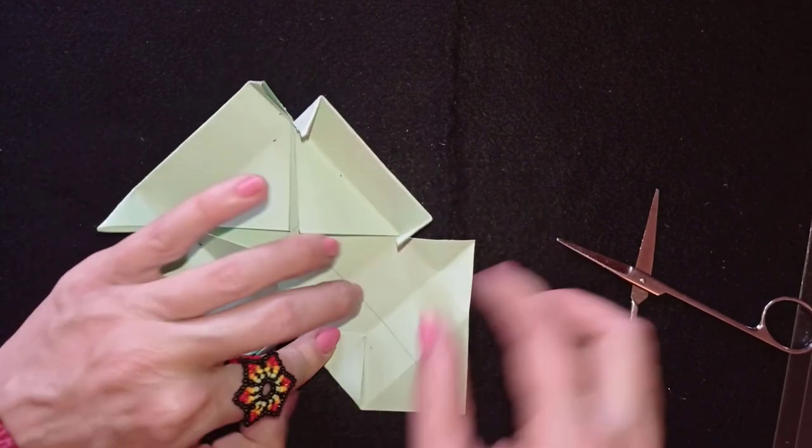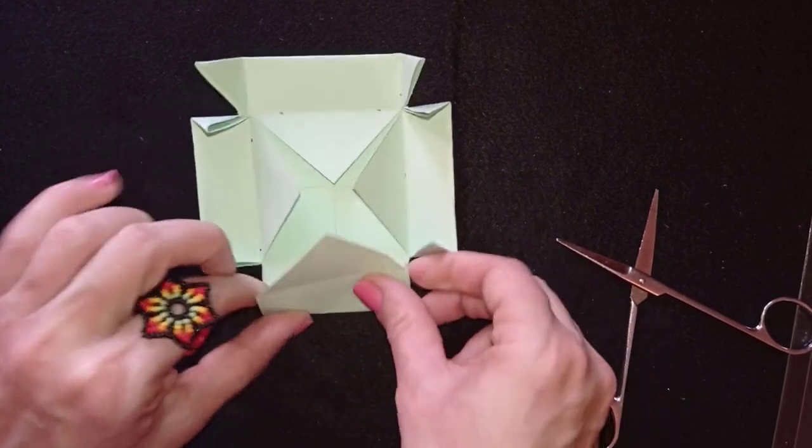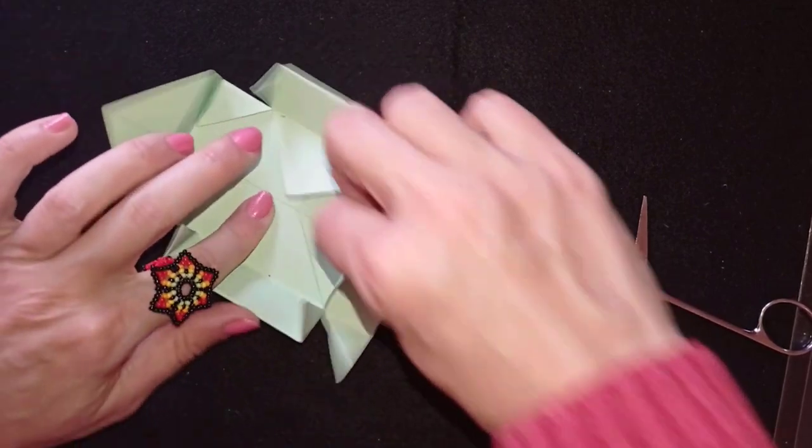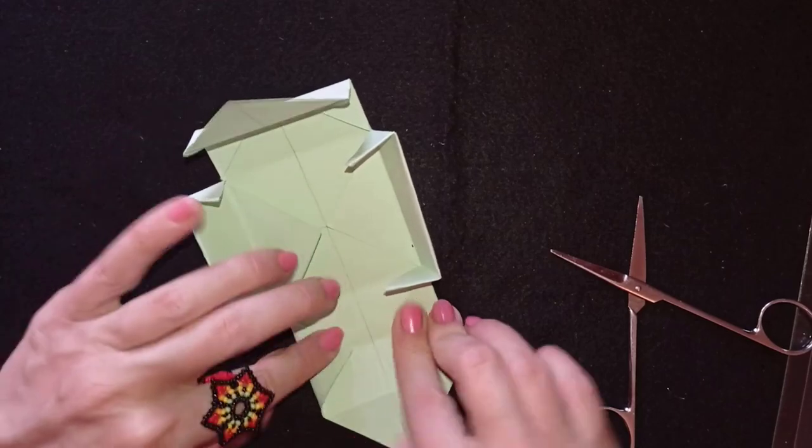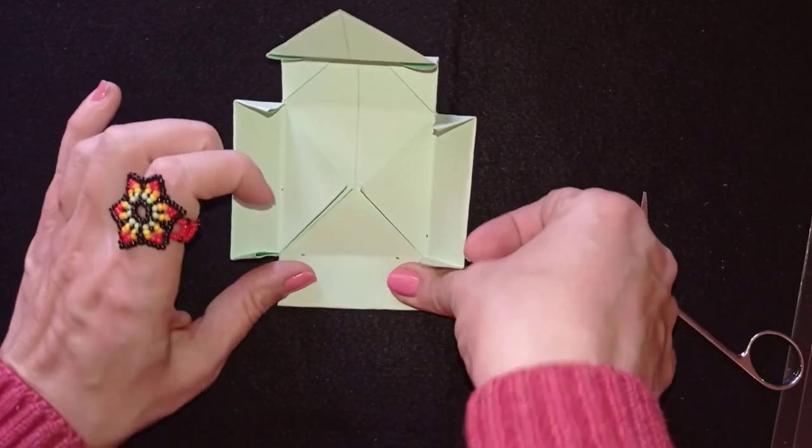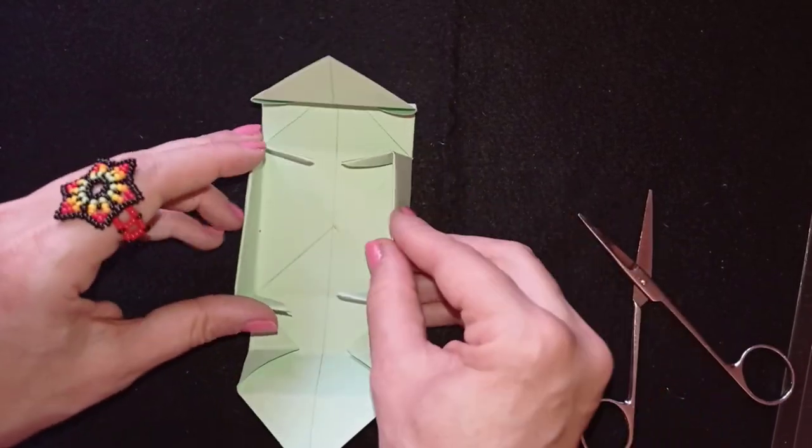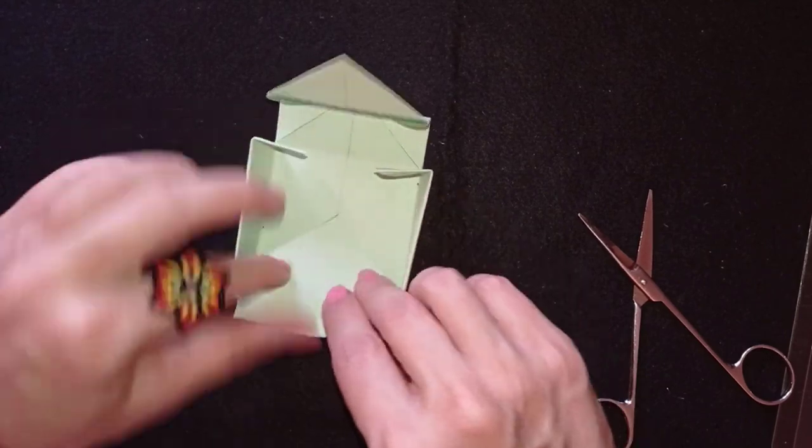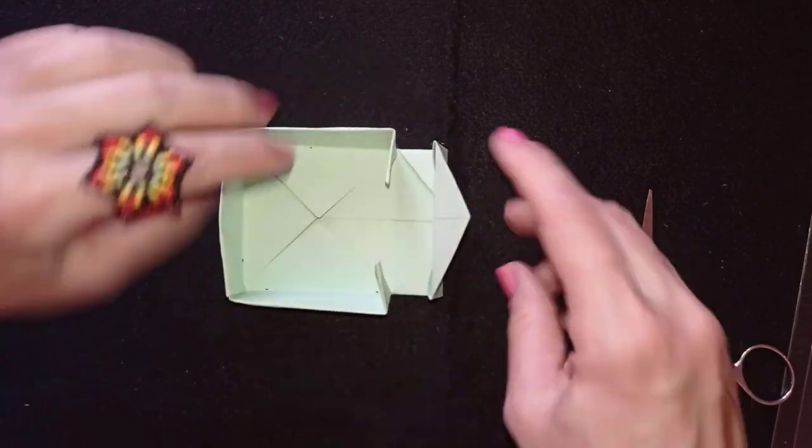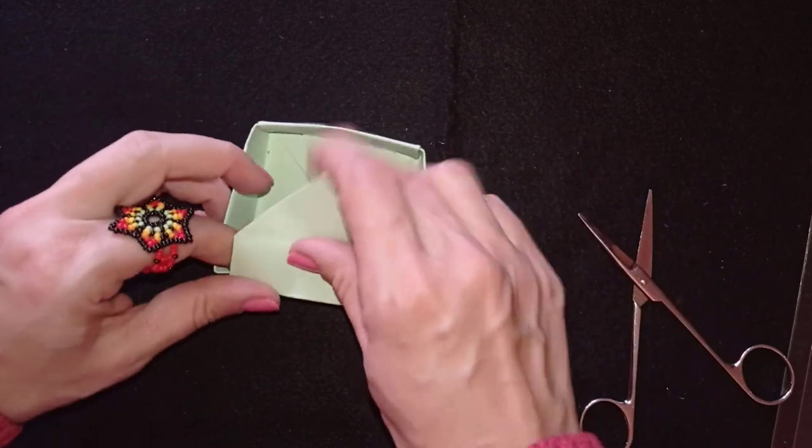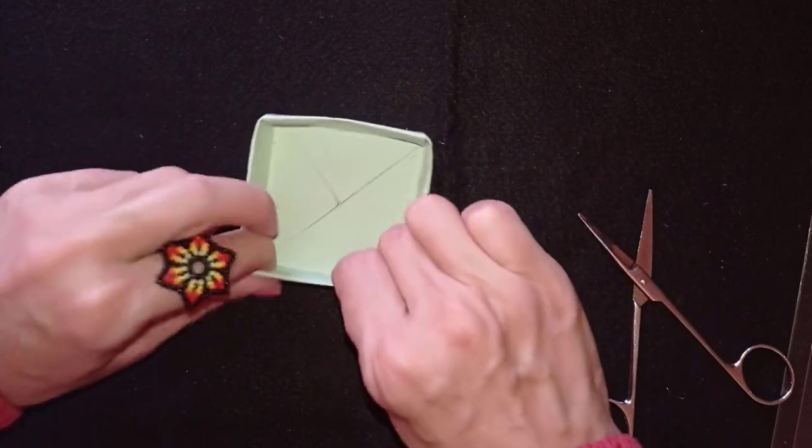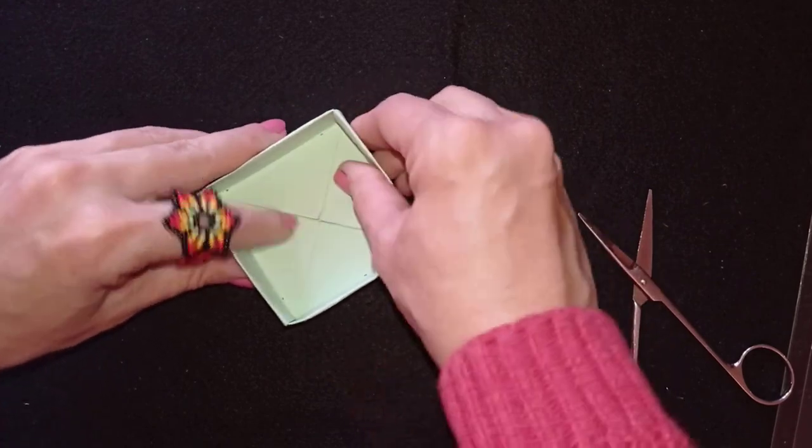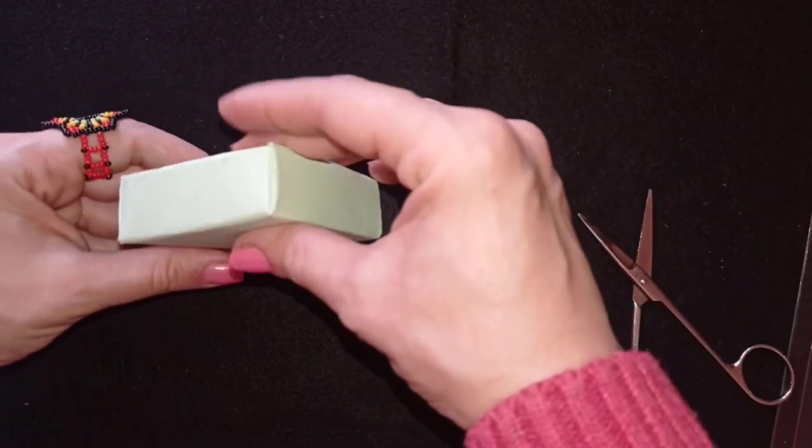And the familiar steps that I showed you before. Fold it to the inner side, open it, fold it like this to hide them. Now do this and close from here and close from here.